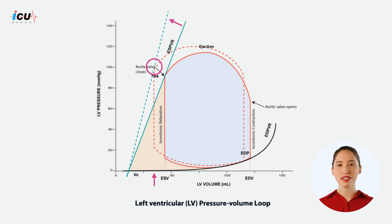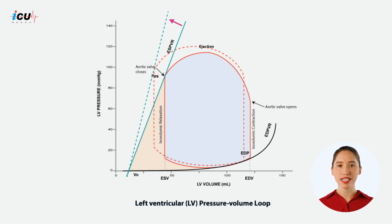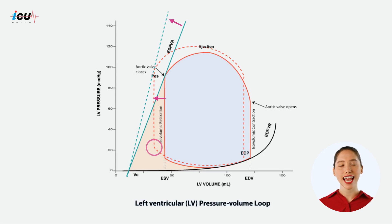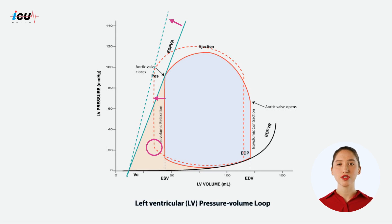Essentially, the heart can pump more effectively against a given afterload, leading to higher pressures. Increased contractility means the heart can eject a greater volume of blood during systole, which reduces the end systolic volume. As a result, the volume of blood left in the ventricle after contraction is lower.